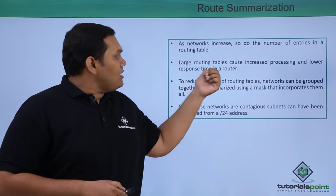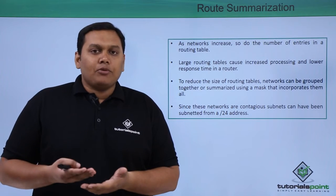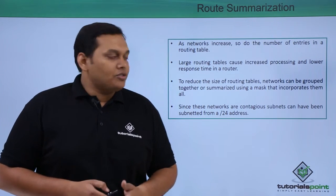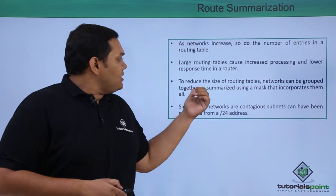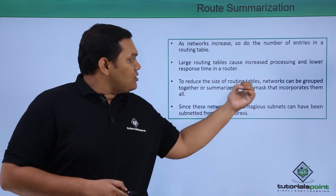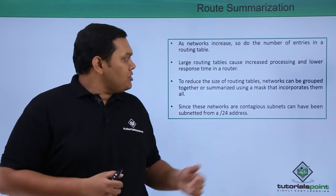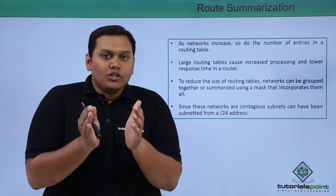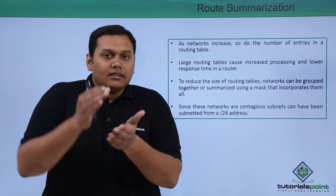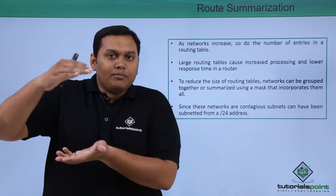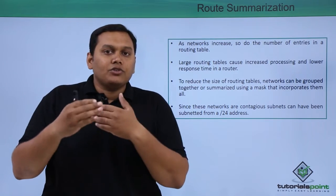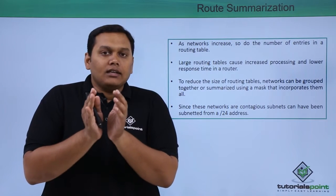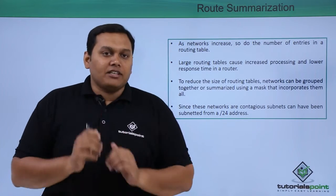Large routing tables increase processing time and also response time on the routers. Route summarization reduces routing tables — networks can be grouped together or summarized so that the routing table length will be decreased, and the response from the router will also be very fast.